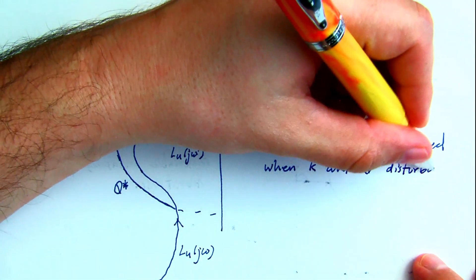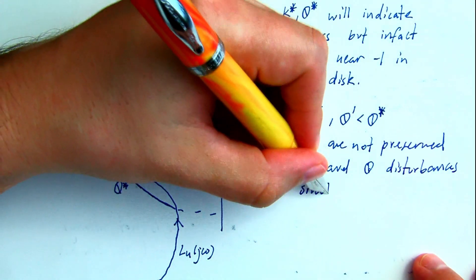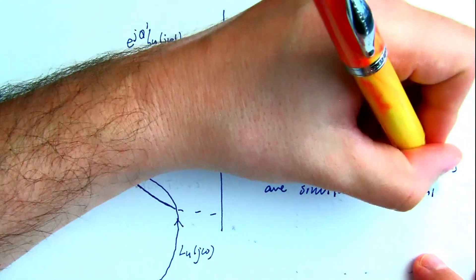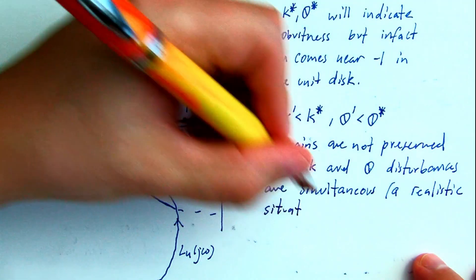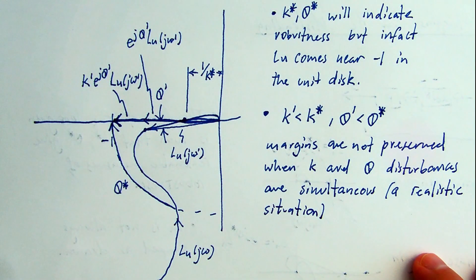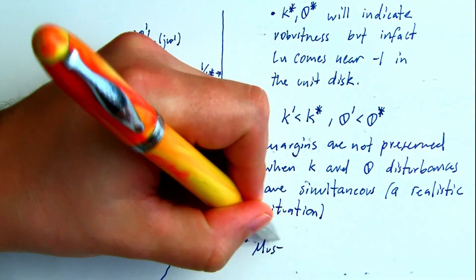And so the key takeaway is that margins are not preserved, that is stability margins, gain and phase margins, are not preserved when gain and phase disturbances are simultaneous, which is a very realistic situation.